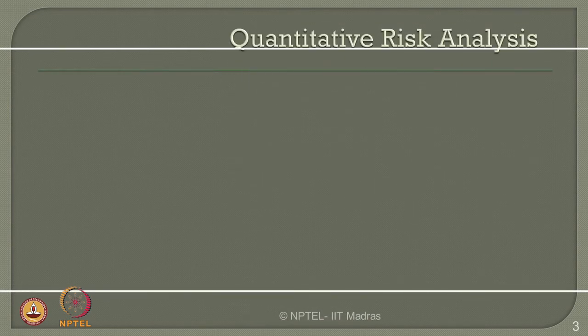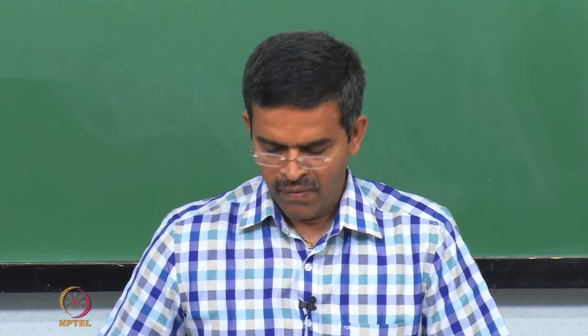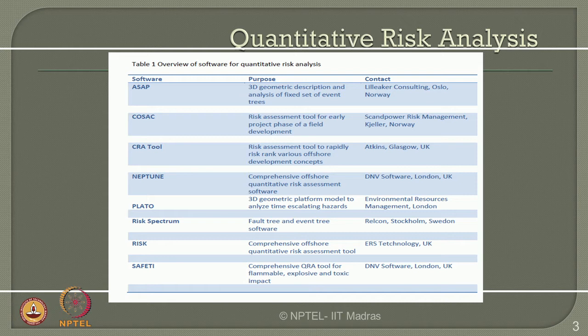We will talk about the different software or areas of software used in HSE. We can broadly divide this into 4 segments. On the top is QRA, which is quantitative risk analysis, which has got a variety of software used in the industry in practice now. The first on the list is ASAP, which is a three-dimensional geometric description and analysis used for a fixed set of event trees, generally developed by Lilliker Consulting, Oslo, Norway.